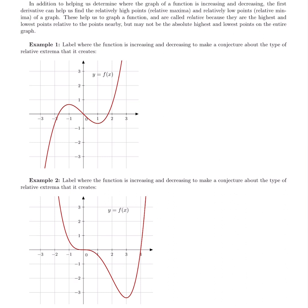Looking at this graph for example one, we're going to label where the function is increasing and decreasing and make a conjecture about the relative extrema. You may already be able to identify relative max and relative min from algebra. Now we're going to use calculus to figure out the pattern with the derivative. Reading left to right — just like English — this first piece is rising, so it has a positive first derivative.